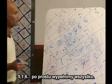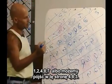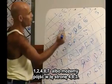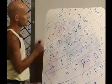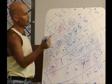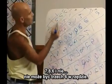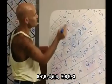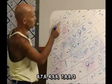Just fill them all in. One, two, four, eight, seven. So we can go this way: 4, 8, 3, 4, 8, 7, 5. Then 7, 8, 6. It can't be three 6s in a row. Eight, seven, six, four, five, six. Seven, eight, nine.